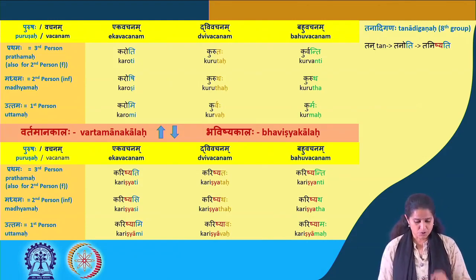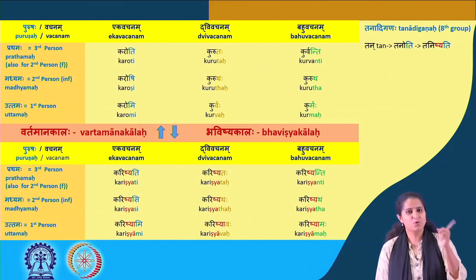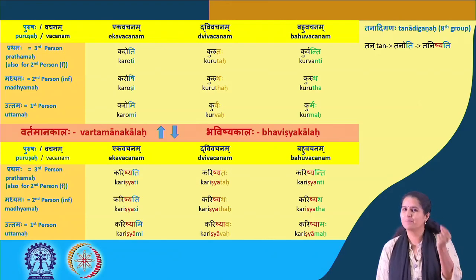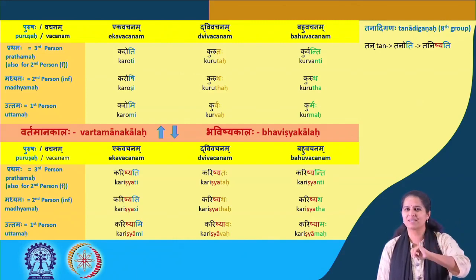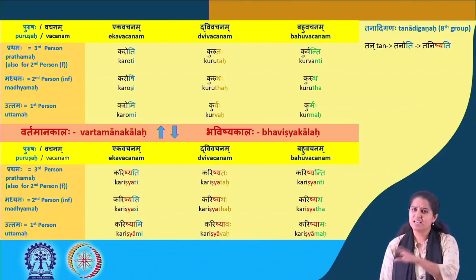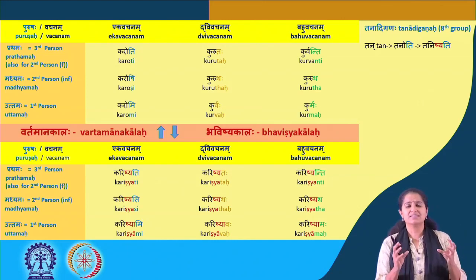If you wanted to make a sentence — 'you, informal singular, do your work well' — it would be: Tvam Karoshi. Kim Karoshi? Karyam Karoshi. Katham Karoshi? Samyak Karoshi. Kasya Karyam? Tavakaryam. So the whole sentence: Tvam Tavakaryam Samyak Karoshi. The verb Karoti is a very foundational verb — it allows many sentences and is the base for constructing a lot of expressions.